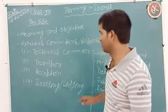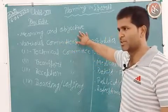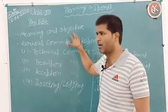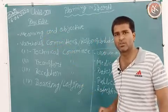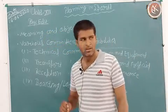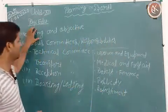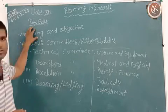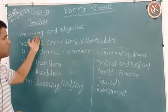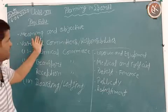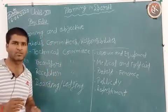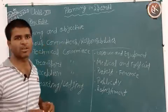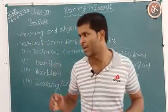First of all, meaning and objectives — means planning के क्या meanings हैं और क्या objectives हैं, क्या उसके अर्थ हैं और क्या उद्देश हैं. Planning क्या होती है — Planning is a pre-determined course of action to achieve a goal. Planning एक pre-determined course of action होती है जिसके द्वारा हम goals को achieve करते हैं.